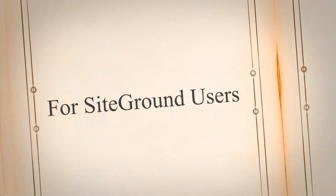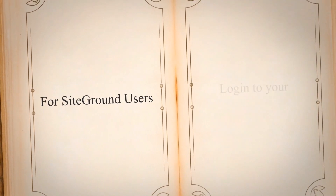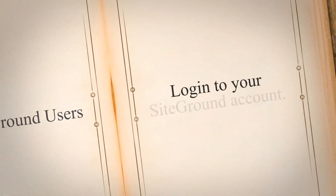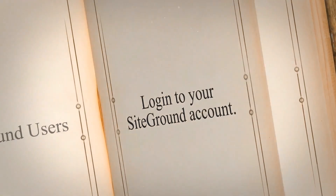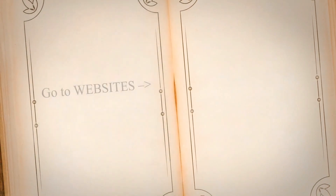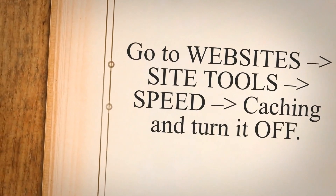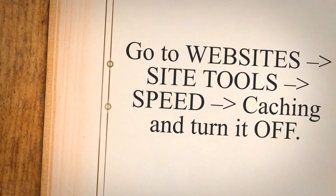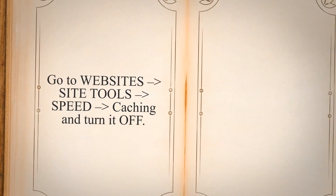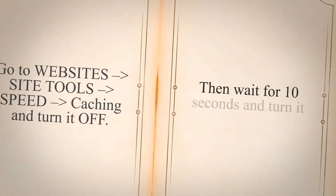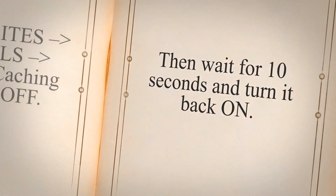For SiteGround users: log in to your SiteGround account, go to Websites > Site Tools > Speed > Caching and turn it off. Then wait for 10 seconds and turn it back on.